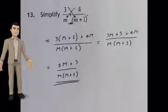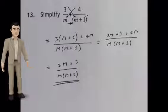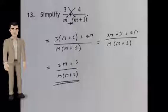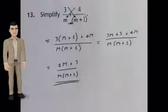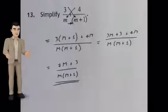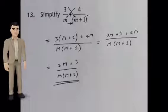Simplify 3 over m plus 4 over m plus 1. Firstly, multiply the two denominators and then cross multiply.